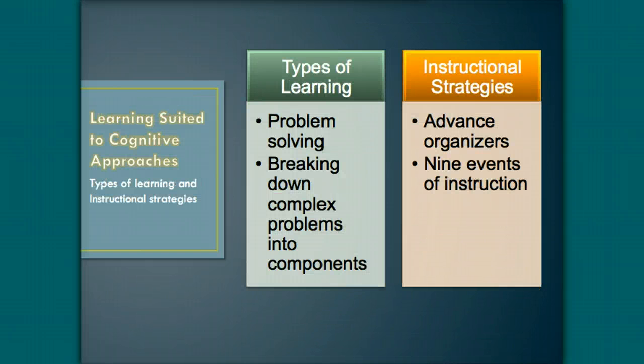Learning outcomes that are focused on complex, higher levels of learning, such as problem-solving, are best explained by cognitivism because the focus is on breaking down complex problems into component parts and relating the content to be learned with prior knowledge to build higher levels of understanding. Instructional strategies consider the organization of content for learning, including the use of advanced organizers like blank outline notes for lectures or reading, and Gagné's nine events of instruction.